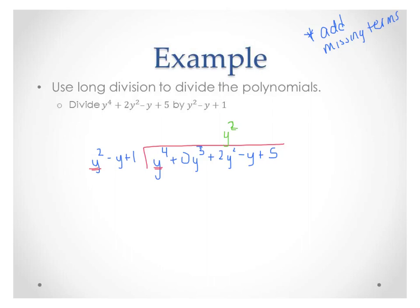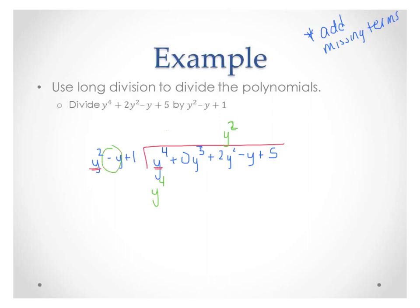Then you multiply — y squared times all three terms out front. So y squared times y squared is y to the 4th, put that under the y to the 4th. y squared times negative y is negative y cubed. y squared times 1 is positive y squared. Now, once you've done that, you subtract — these are the same steps you did before in long division. I'm going to distribute this minus sign, so it's minus, plus, minus. y to the 4th minus y to the 4th — those cancel.